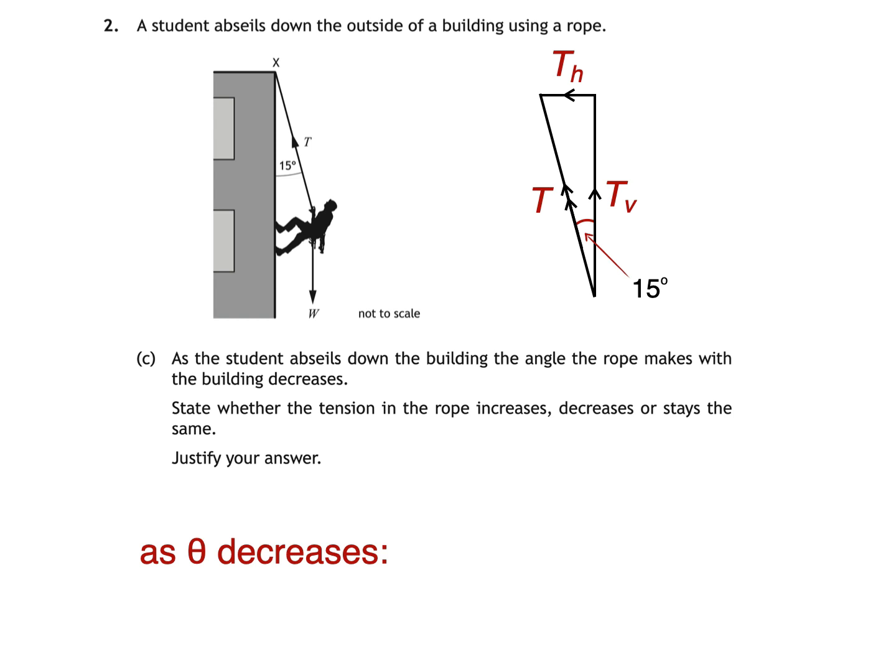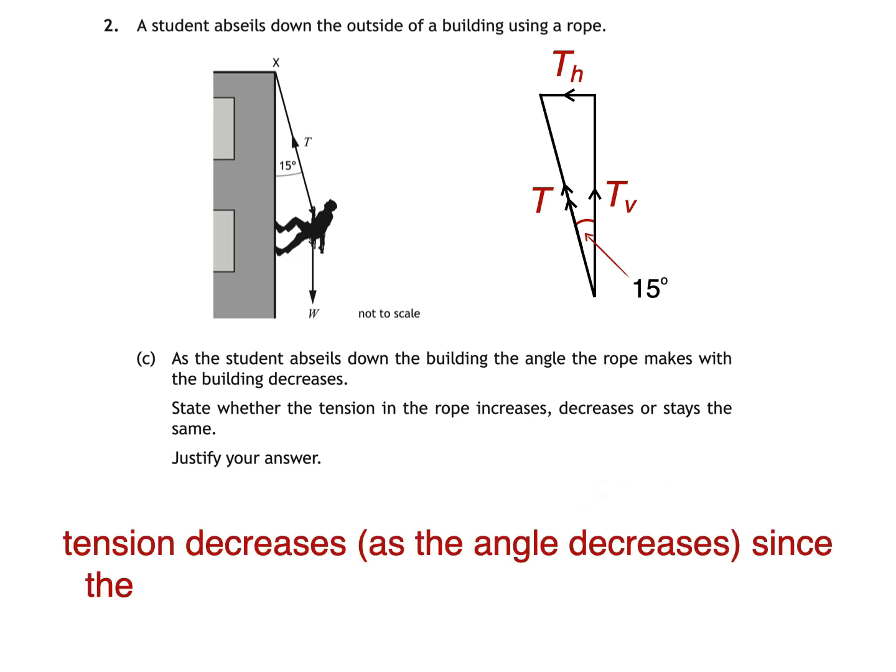Since we have a right angle triangle, it follows that T² equals Tv² plus Th². The vertical component is also going to be constant since it's equal to the weight of the student, which isn't changing. As the angle decreases, it should be clear enough to see that the horizontal component of the tension force will decrease, which must mean that the tension force itself will decrease. So we could write something like this: Tension decreases as the angle decreases since the horizontal component of tension decreases.